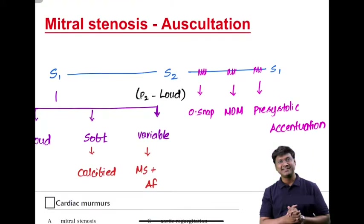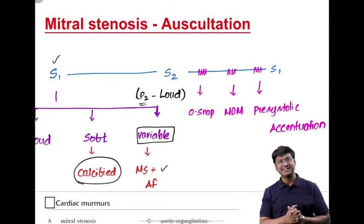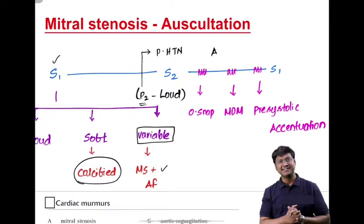For auscultatory findings in mitral stenosis: the first heart sound is loud S1, but in calcified mitral stenosis S1 is soft, and if associated with atrial fibrillation S1 is variable. The second heart sound — P2 will be loud specifically in severe mitral stenosis when pulmonary hypertension develops. There are also added sounds between S1 and S2.